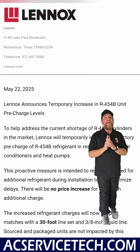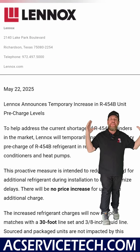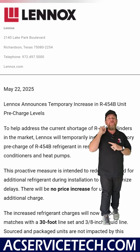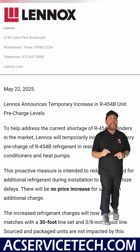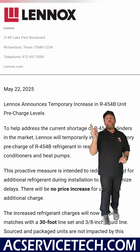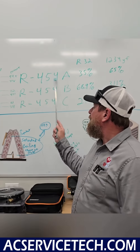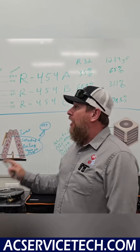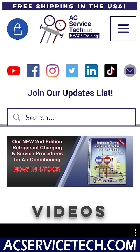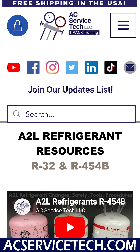We also go over some of the changes manufacturers are making to increase the factory charge length to include about 30 feet with a line set. Ty goes over some of that and the differences in the mixtures of these new refrigerants. If you want to learn more, head over to acservicetech.com in the resource tab and click on the A2L resource page.